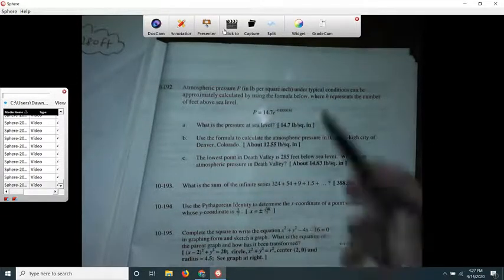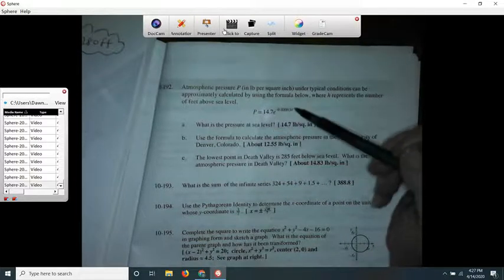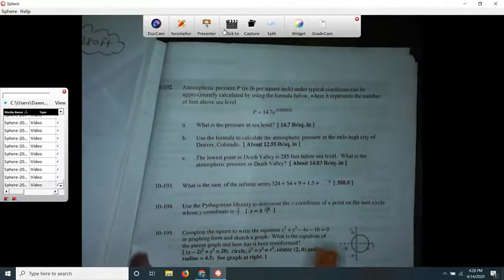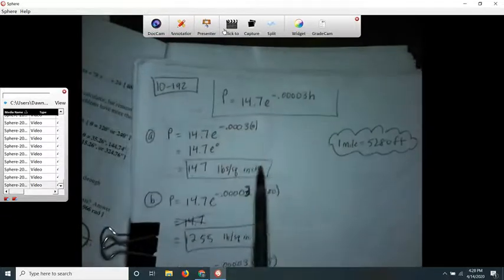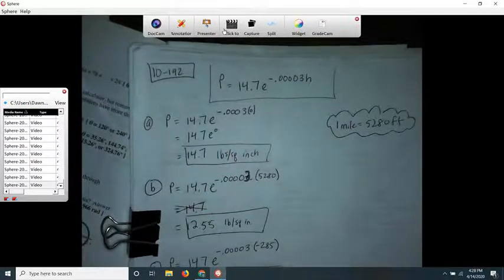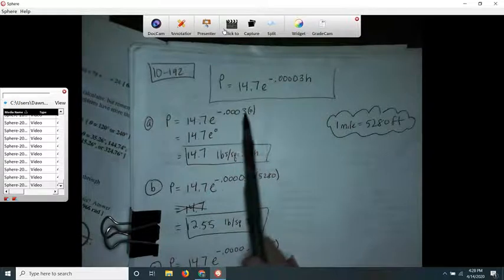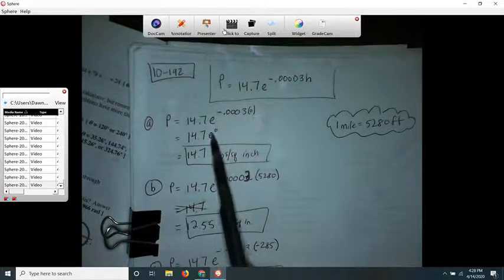So all you have to do with this kind of problem is know how to push the buttons on your calculator and plug in numbers for H. So sea level H would be 0 because it'd be 0 feet above sea level. So I just wrote it out and then maybe the question is, well this one you don't have to use your calculator for.